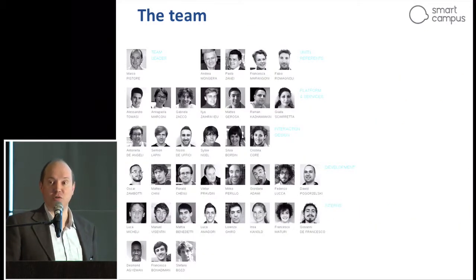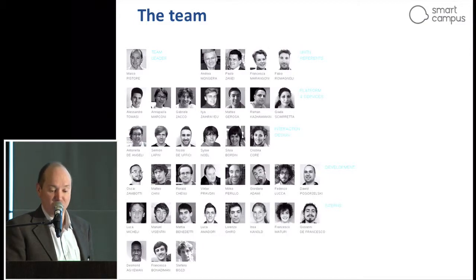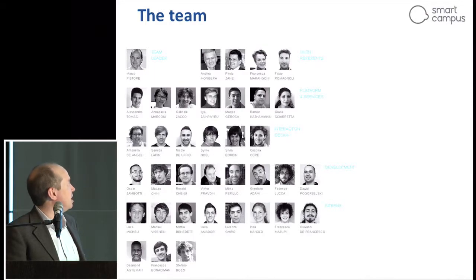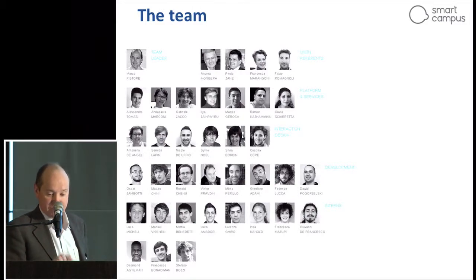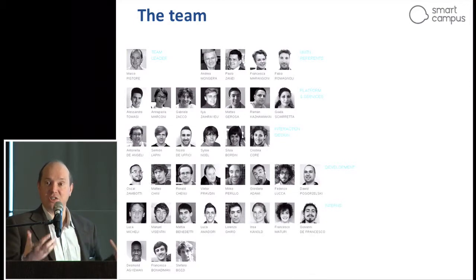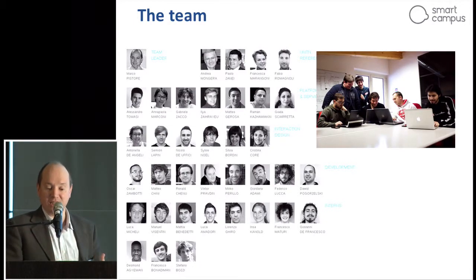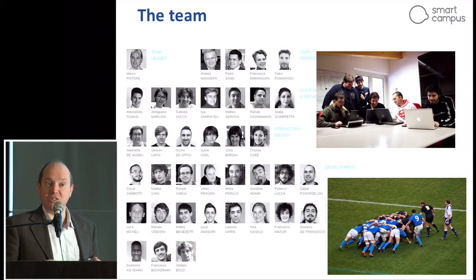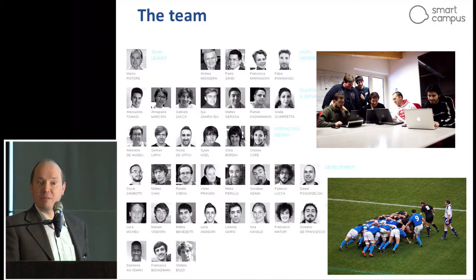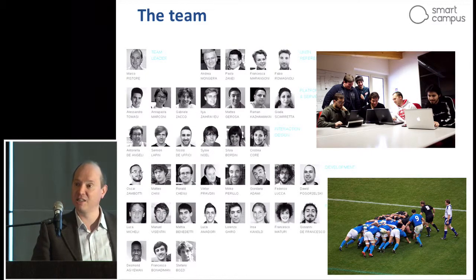Here you see a picture of the team at a certain point in the project. In the lower part are the students — junior programmers who were students a couple of years ago — and then the research staff. It is half and half at the moment. What is nice is that researchers and students work together, and it is harder to detect who are the students and who are the programmers. They work with the Scrum methodology, pushing forward the implementation of apps to achieve the goals they set for themselves.